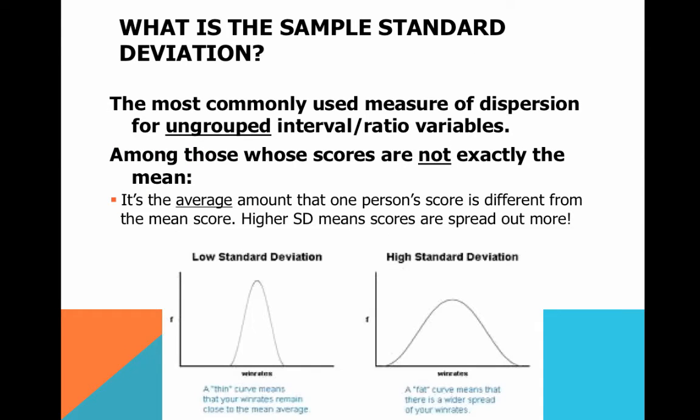Our third and probably our most complicated and hardest measure of dispersion to calculate: the sample standard deviation. This is the most commonly used measure of dispersion or variability that we see when we use ungrouped interval ratio variables. What the standard deviation really tells us is, if your score is not the mean, how far on average do you differ from that average score? The bigger the standard deviation, the more the scores are spread out from the mean.